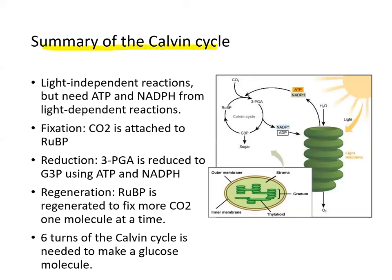Briefly, let's go over the summary of the Calvin cycle. It is a light-independent reaction but needs ATP and NADPH from light-dependent reactions. It fixes carbon to ribulose bisphosphate, reduces 3-PGA to G3P using energy and reducing potential, and regenerates ribulose bisphosphate again to fix more carbon one molecule at a time. Six turns of the Calvin cycle are needed to produce one glucose molecule. Light causes water to become oxygen, producing NADPH and ATP; carbon is fixed to RuBP and cycles to produce G3P, which is converted into sugar — all occurring in the stroma.